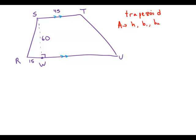And it turns out we know that base one is 45. We know that the height is 60. And so really, we would only need base two, which is the length of RU. If we know RU, we can figure out the area of the entire trapezoid.